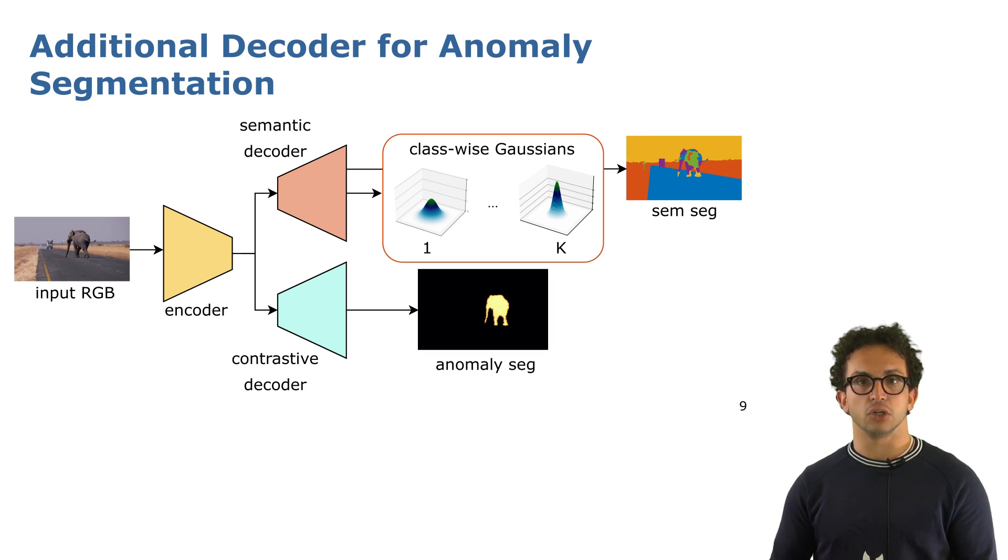We also introduced a second decoder that tackles the task of anomaly segmentation, which is a slightly simpler task in which each pixel is classified as either unknown, an anomaly, or known.